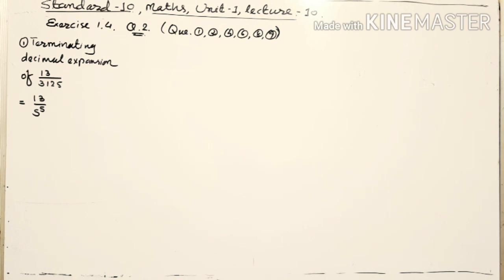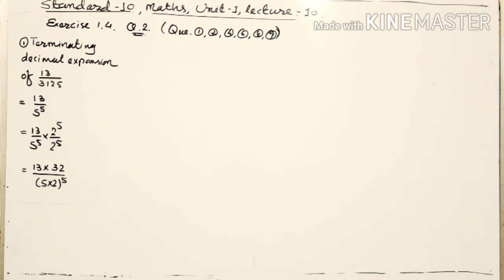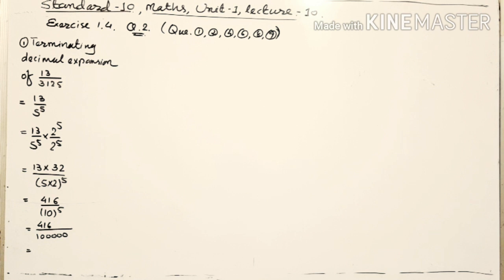For the decimal expansion, I need to convert the denominator into a power of 10. So I will multiply the numerator and denominator — in the denominator I will get 5 into 2 raised to 5, and 5 into 2 means 10. So by doing this process I got 416 upon 10 raised to 5.